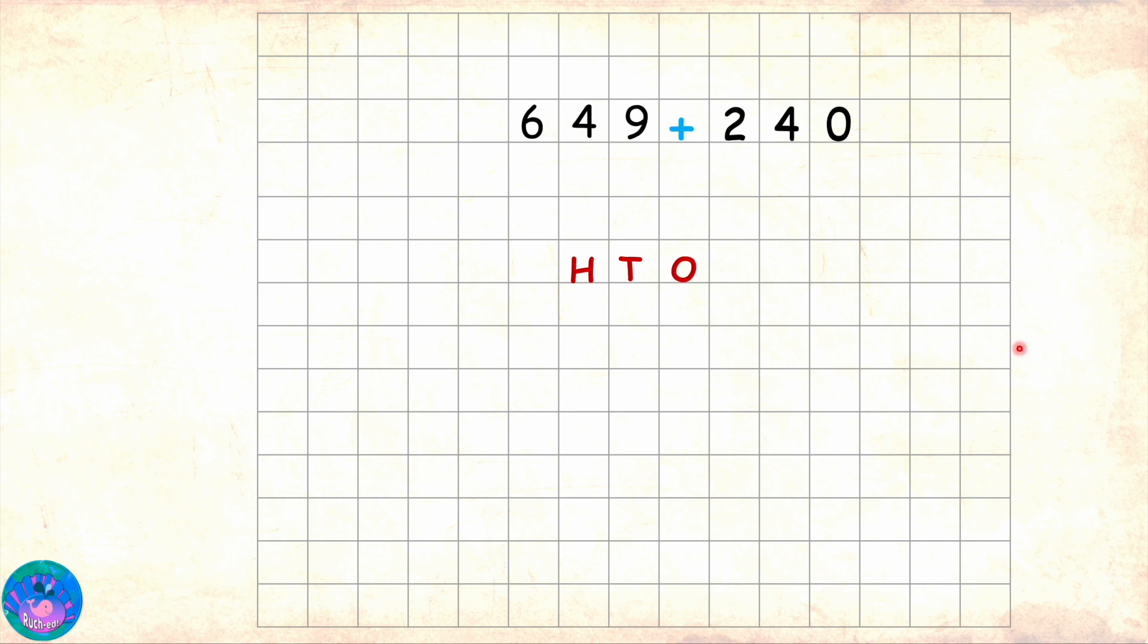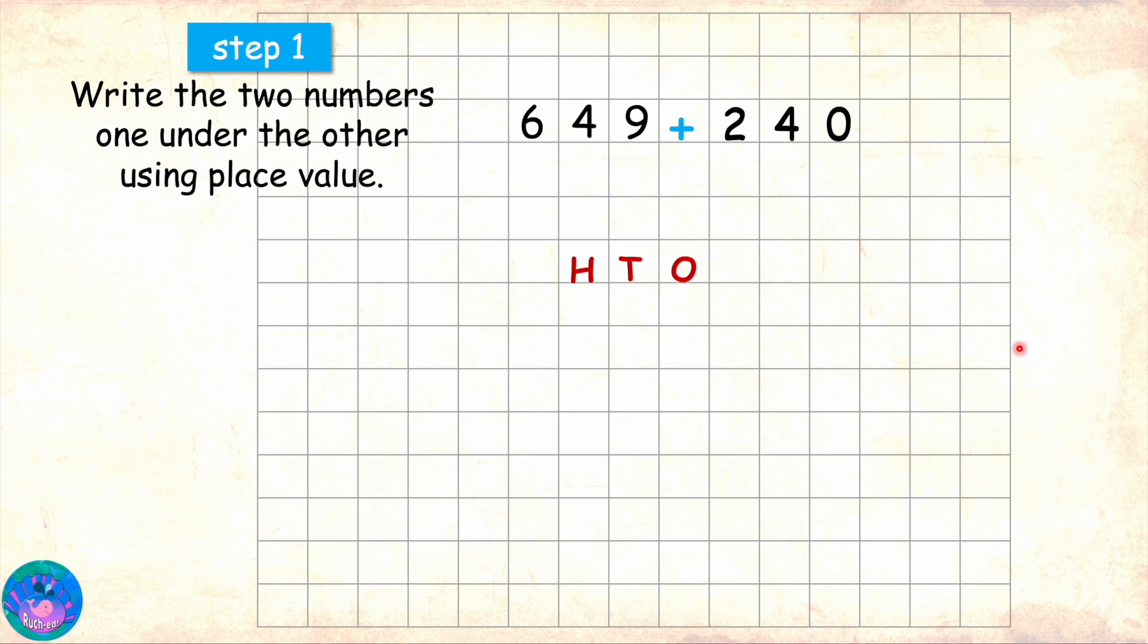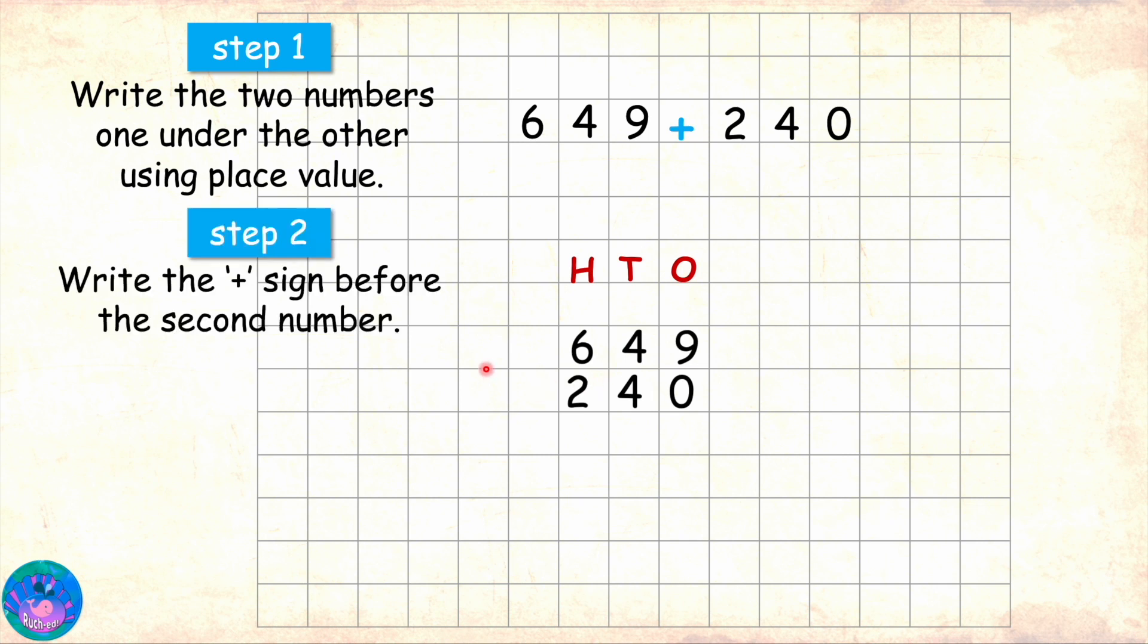So we will start with writing the numbers one under the other according to place value. When writing 649, 6 is written in hundreds, 4 under tens, and 9 under ones. Similarly, 240 will be written with 0 under ones, 4 under tens, and 2 under hundreds. Then we write the plus symbol before the second number and draw lines for the answer.